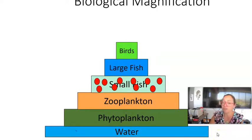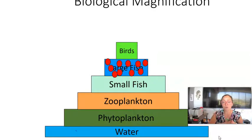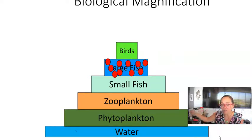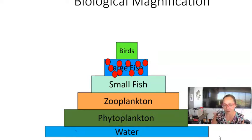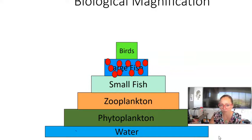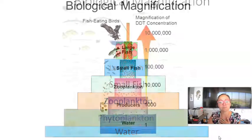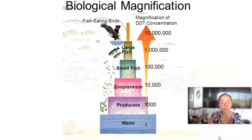Think about how many small fish a large fish like a tuna eats over its long life — all those toxins accumulate and concentrate in the body tissue of that larger fish. In the case of DDT, birds like our bald eagles were eating polluted fish, and it caused their eggshells not to harden, so their babies weren't surviving. We almost had the extinction of the American bald eagle from pollution.